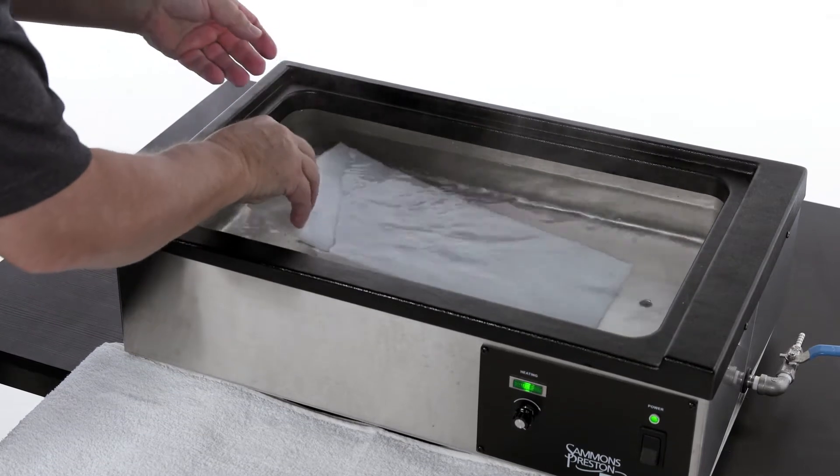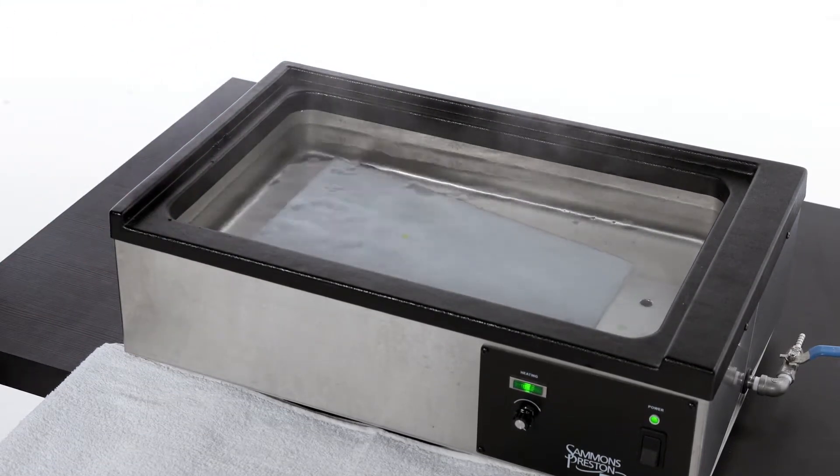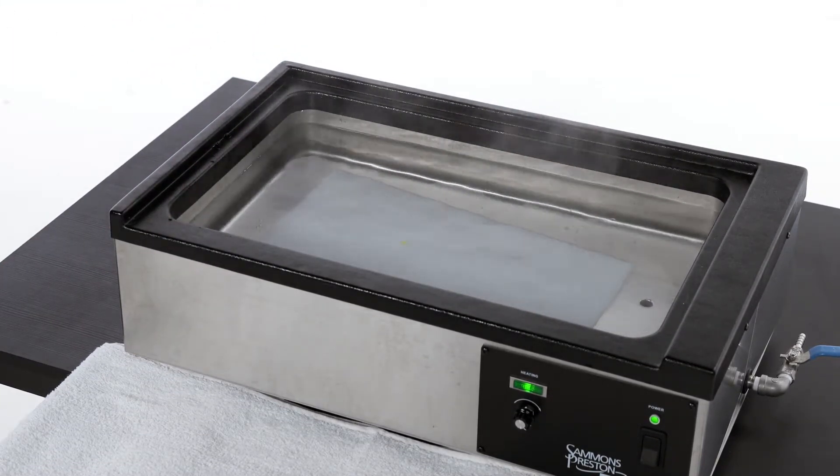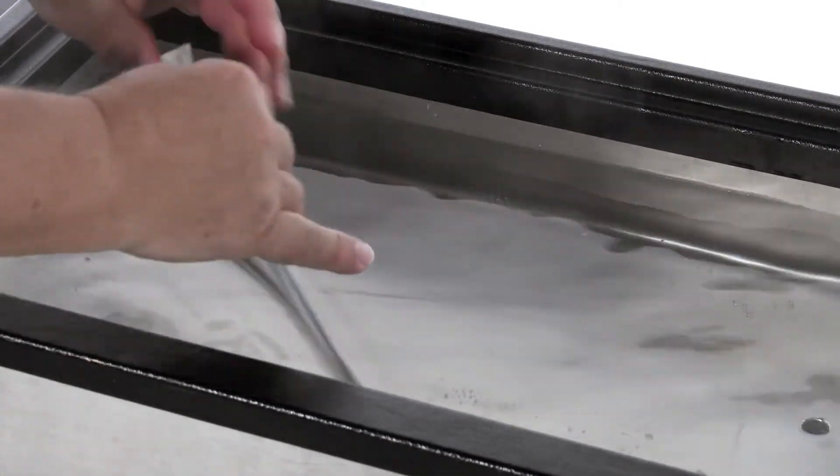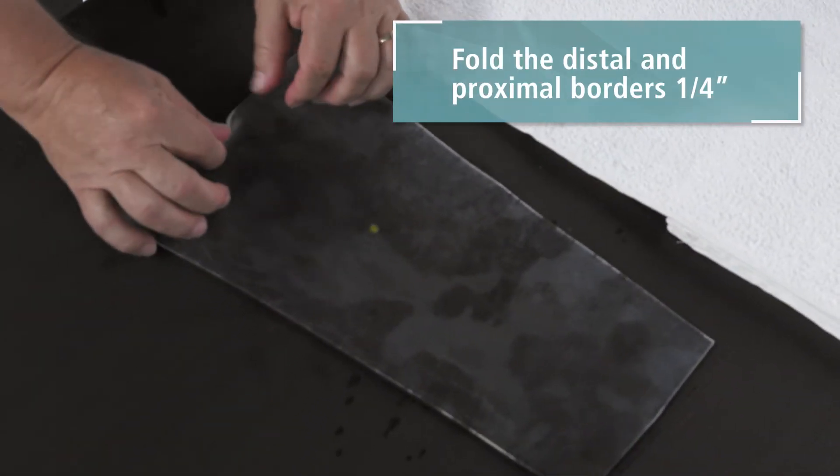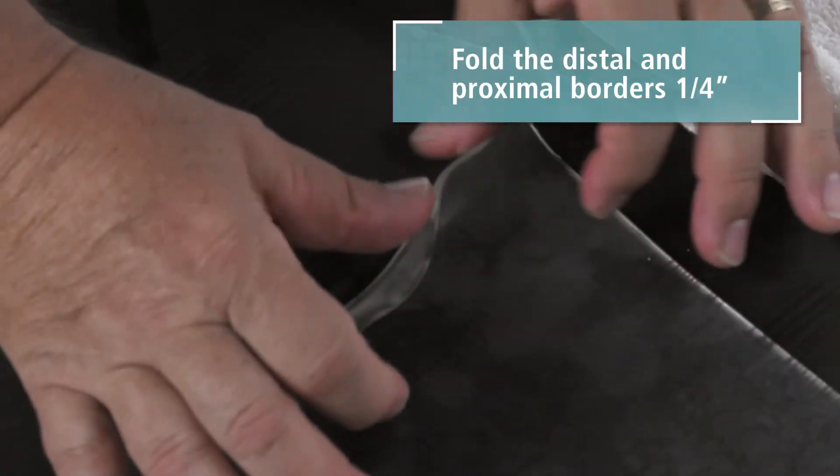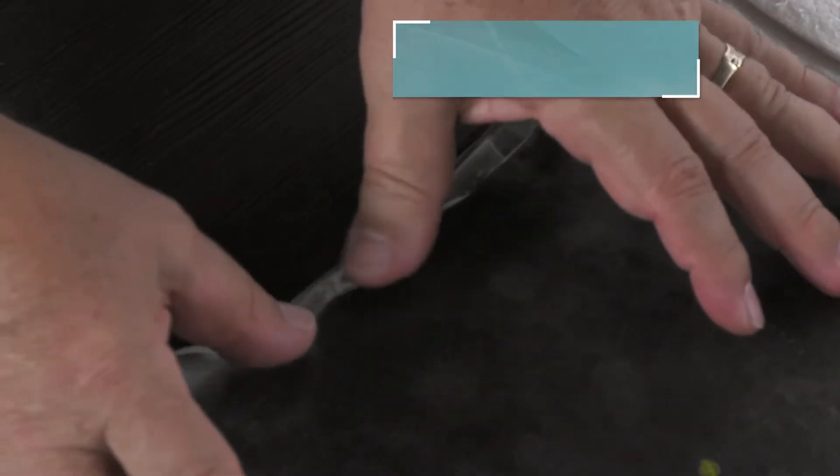Place the material in the splint pan for approximately 1 minute or until it is transparent. Remove the material from the splint pan and fold the distal and proximal borders 1 quarter inch, pressing on the folds to ensure they remain folded.